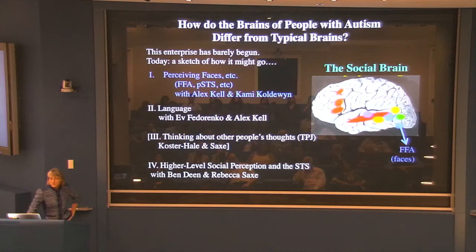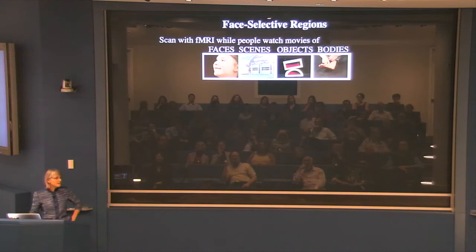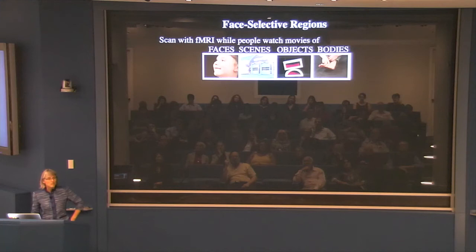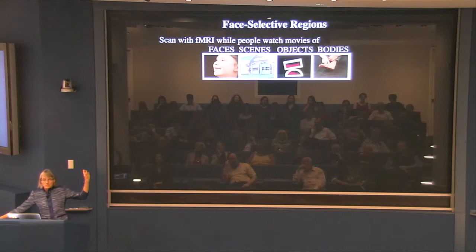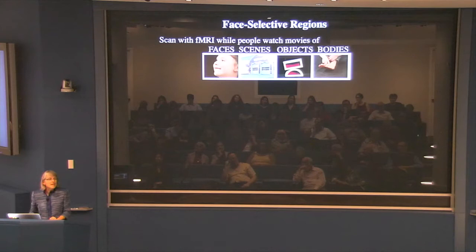Let's start with the face stuff. We did the very obvious thing others have done before: scan subjects with functional MRI while they're looking at images of faces, scenes, objects, or bodies. In this case we showed them three-second movie clips we shot, because we thought they'd be more engaging for scanning kids — though actually all the data I'm going to show are from adults, since it's really hard to scan kids. You get a lot of artifacts.